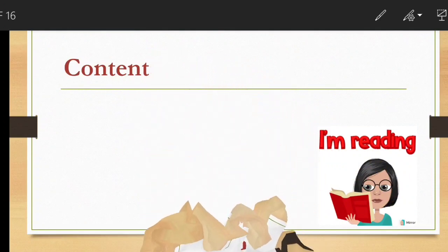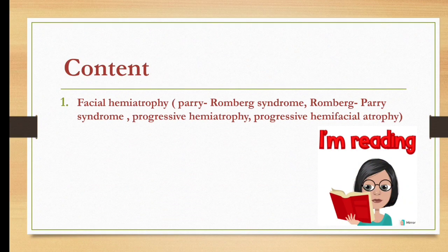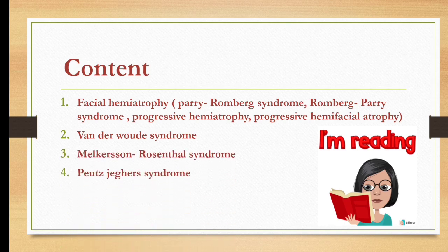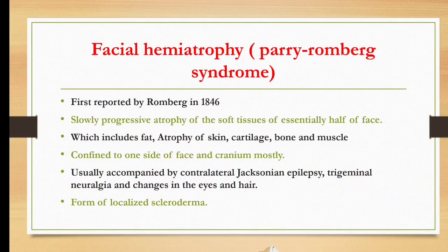Today we're going to study about facial hemi atrophy. Pay attention to the other names of this syndrome. It is also known as Parry-Romberg, or Romberg-Parry, or progressive hemi atrophy, or progressive hemi facial atrophy. The second syndrome is Van der Woude syndrome, then Melkersson-Rosenthal syndrome, Peutz-Jeghers syndrome, and Gardner syndrome. These five syndromes are mainly of importance when we study developmental disturbances.